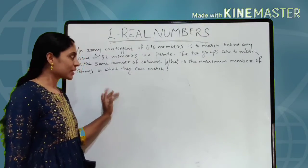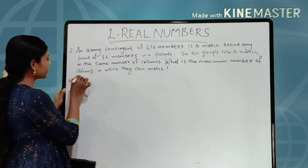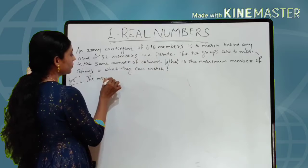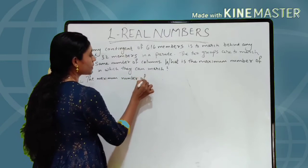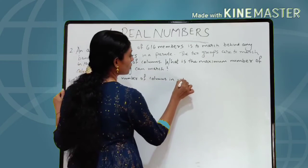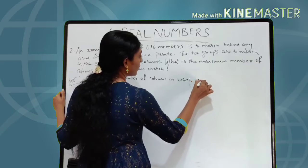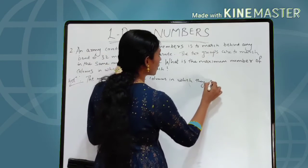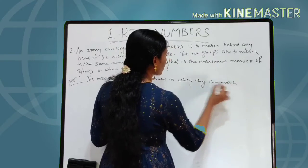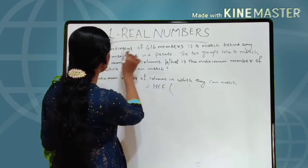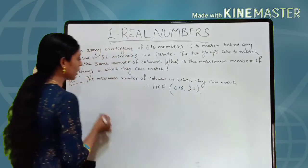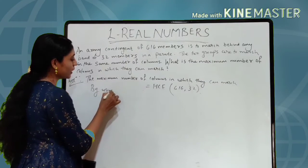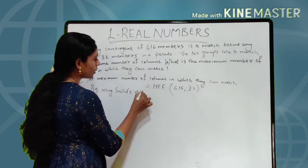Now we look at the second homework question. The question is to find the maximum number of columns in which the army contingent members can march. The maximum number of columns is equal to the HCF of 616 and 32. To compute this HCF, we use Euclid's division algorithm.